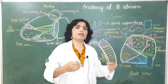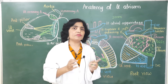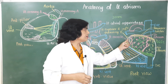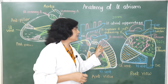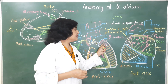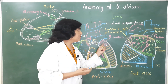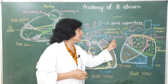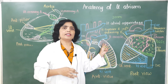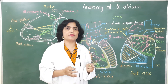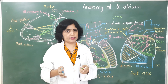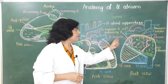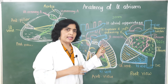The posterior smooth wall of the left atrium is developmentally derived from absorption of the pulmonary veins. The anterior rough part is seen only in the left auricle, and it is made rough by the presence of musculi pectinati. Developmentally, this part is derived from the left part of the primitive atrial chamber of the heart tube.